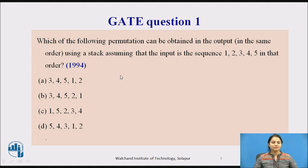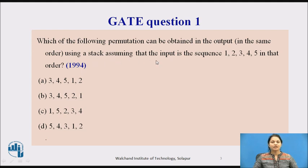Initially, we will see the first question — pause the video and try to answer it. Which of the following permutations can be obtained in the output in the same order using a stack, assuming that the input is the sequence 1, 2, 3, 4, 5 in that order? We have to find out which permutation is possible using a stack, pushing the numbers in order 1, 2, 3, 4, 5, but popping in any sequence.